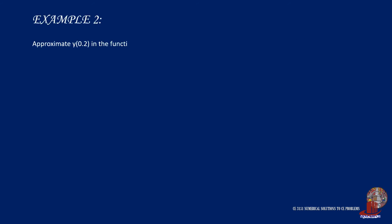How about the second example? Approximate y if x = 0.2 in the function y' = 3x - 2y, when y = 1 when x = 0, and step size is 0.1, using implicit method. List the given: x0 = 0 and y0 = 1. The step size is also 0.1.